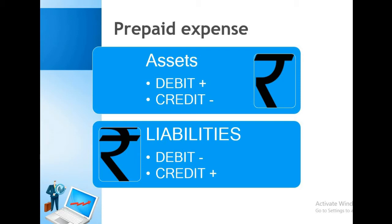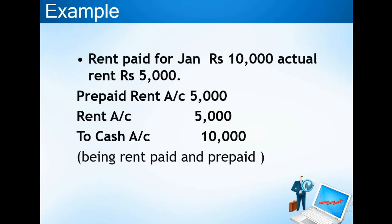Now let's take an example of rent. Suppose rent paid for January is Rs. 10,000 but the actual monthly rent is Rs. 5,000. So we are paying rent in advance — Rs. 5,000 extra. That advance payment is prepaid rent, and prepaid rent is an asset. Since we are adding an asset to our accounts, we debit the prepaid rent account.